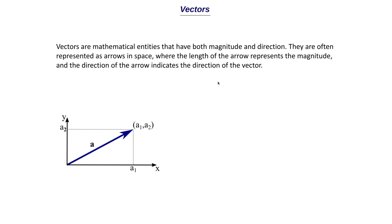You have this magnitude and direction, and you can also have vectors in a higher dimensional space. This vector is currently in a two-dimensional space of x and y, but you can also have it in a three-dimensional space with x, y and z, represented by three coordinate values a1, a2 and a3 — or you can represent the coordinate axes as i, j and so on. A few examples of vectors: in 2D, a coordinate like (2, 1); and in 3D you can think of something like (1, 4, -1) or basically any numbers.